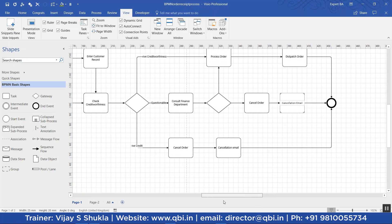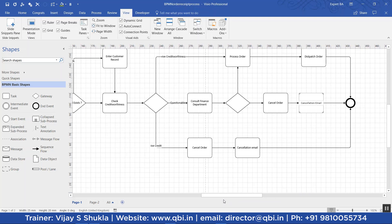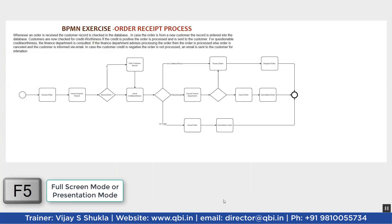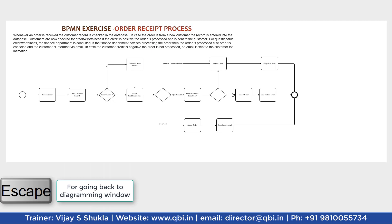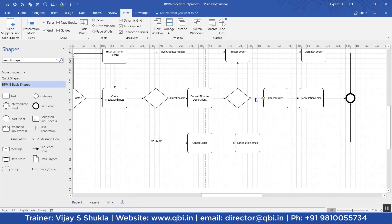This is how our process comes up. I will do F5. I will just add markers to these two sequence flows also. This is negative advice, and this is positive advice.